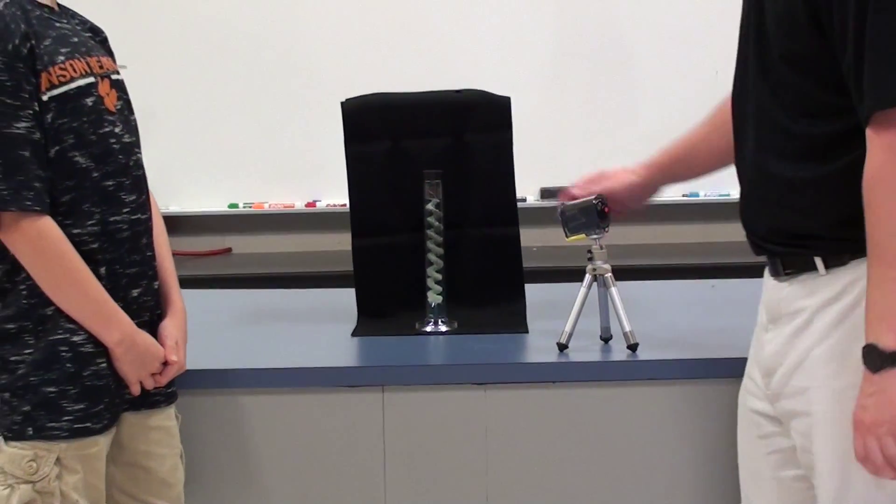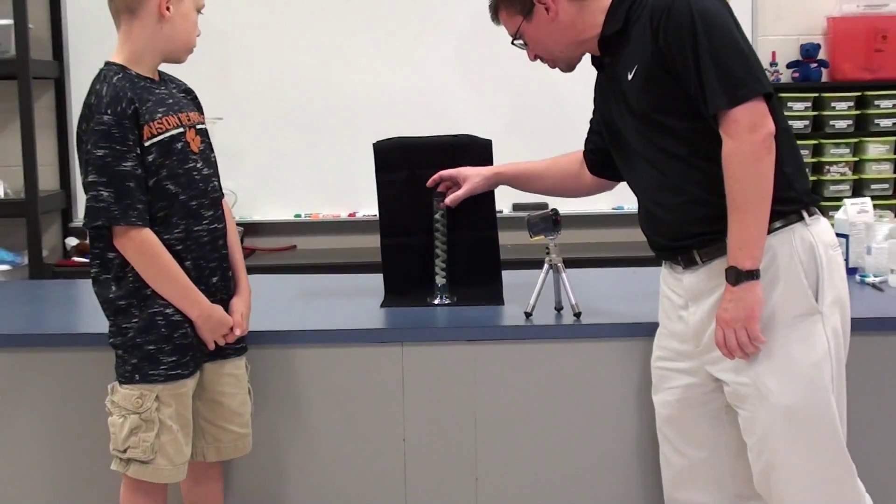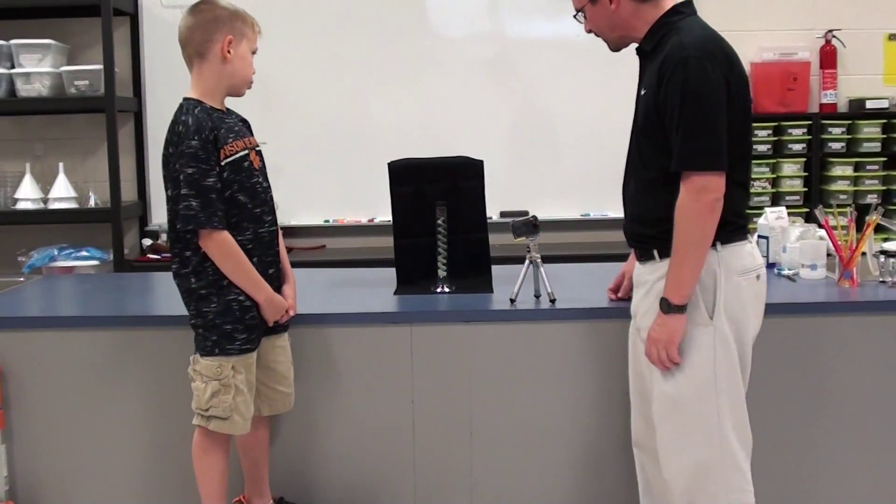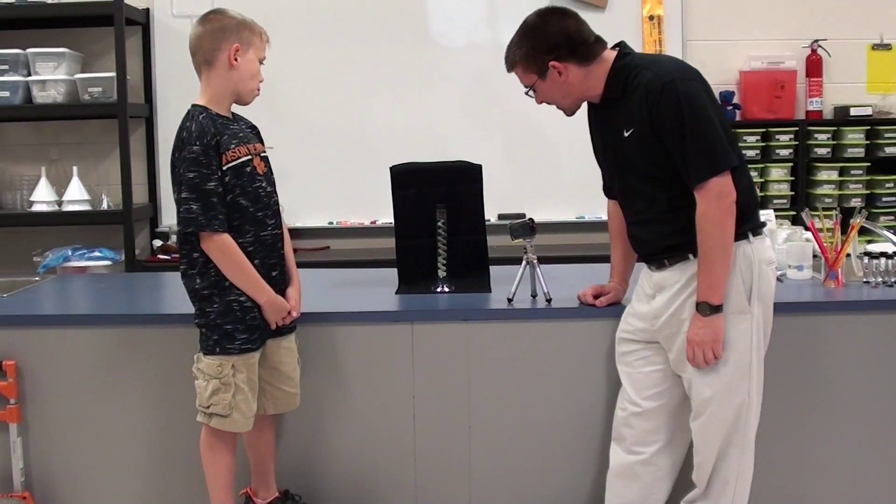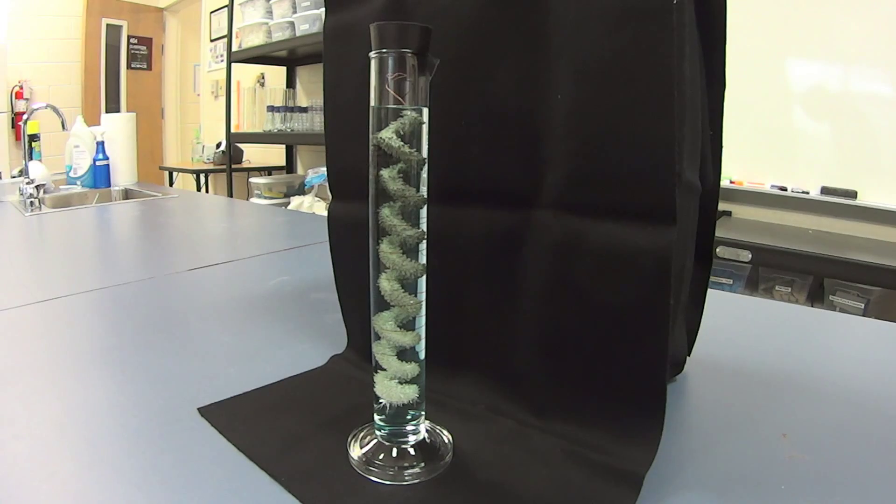So what we have here, this is, again, it's our example of a chemical change, that reaction between the silver nitrate and the copper wire, making these crystals of silver.